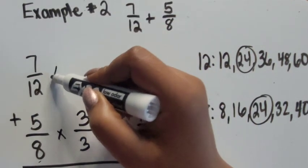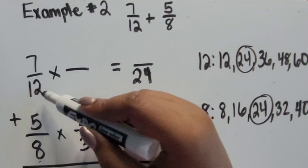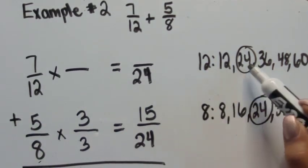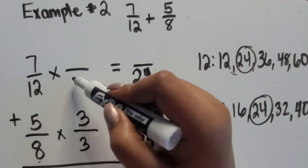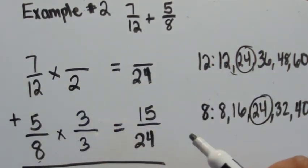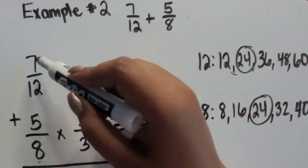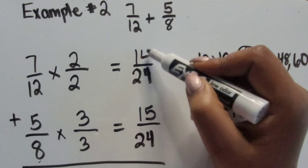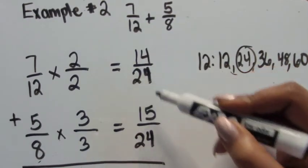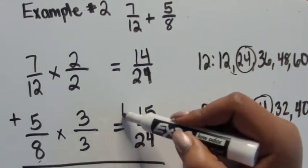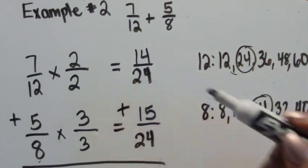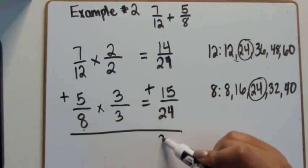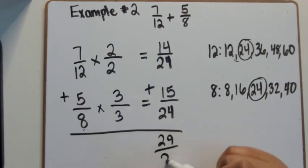For seven-twelfths: twelve times what number equals 24? Looking at the list of multiples, two groups of 12 equals 24, so 12 times two is 24. Seven times two equals 14. Now that our denominators are the same, we can add them together. 14-twenty-fourths plus 15-twenty-fourths equals 29-twenty-fourths.